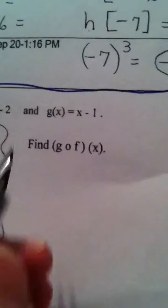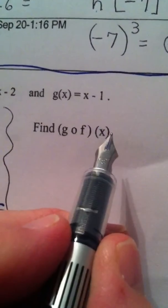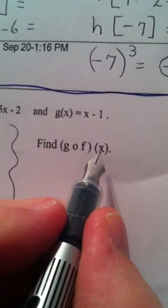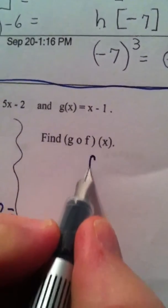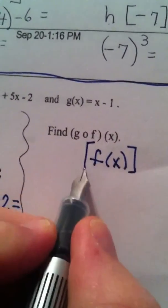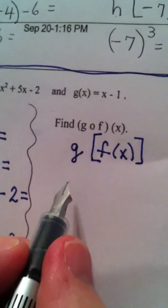Now, if I switch it around and say find g composed with f of x, same procedure. You take x, but this time you start off with f. So, you find f of x first, and then you use function g, but you don't use g to start with.